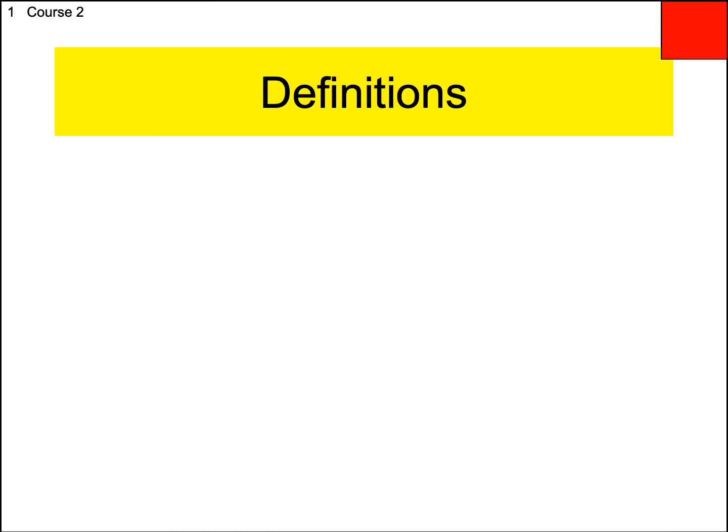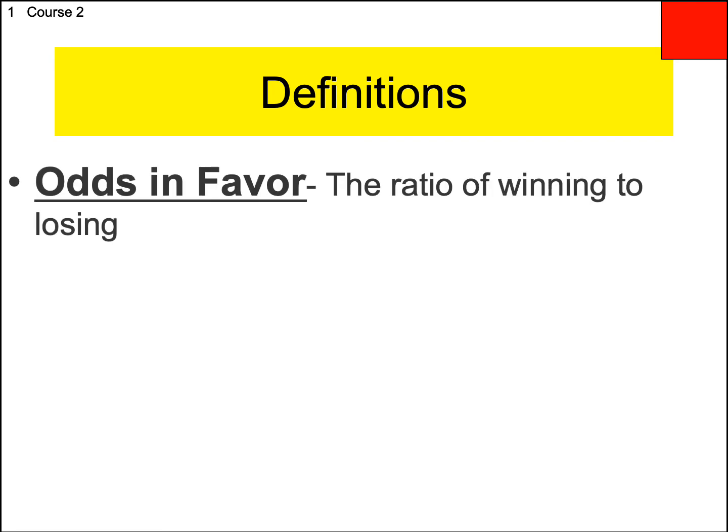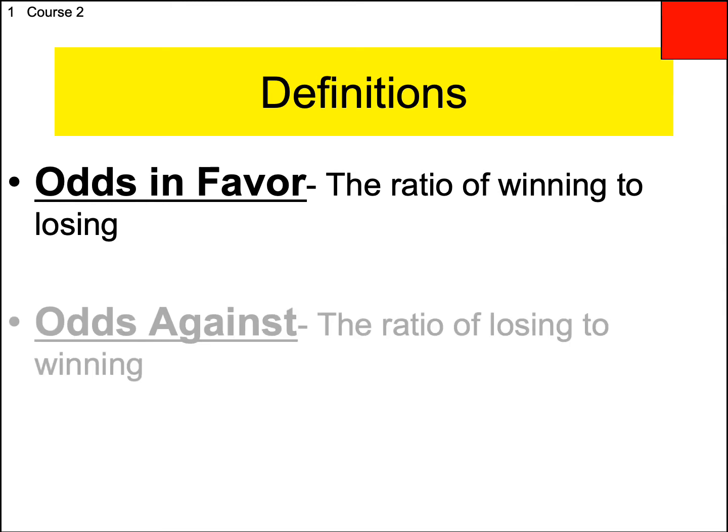Let's write this down. There are two types of odds you will be calculating. One is called odds in favor — you've probably heard this: 'What are the odds in favor of the Denver Broncos winning?' Odds are used a lot in sports. The other is called odds against. Both are ratios, meaning they'll be expressed as fractions. Odds in favor is the ratio of winning to losing. Odds against is the ratio of losing to winning.